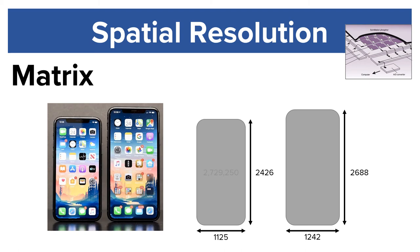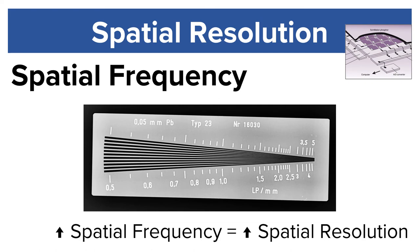The left iPhone has 2,729,250 individual pixels and the right iPhone has 3,338,496 individual pixels. An increase in spatial frequency, or an increase in line pairs per millimeter, increases spatial resolution. As spatial frequency increases, we are able to resolve smaller and smaller objects.